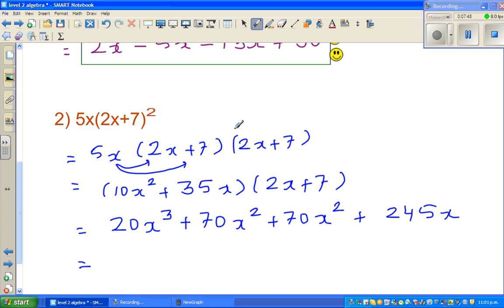You can simplify this. 70x squared plus 70x squared is 140x squared plus 245x. That's what I claim to be.